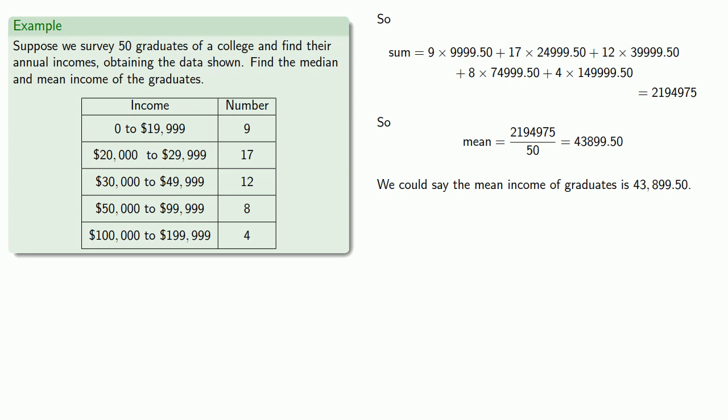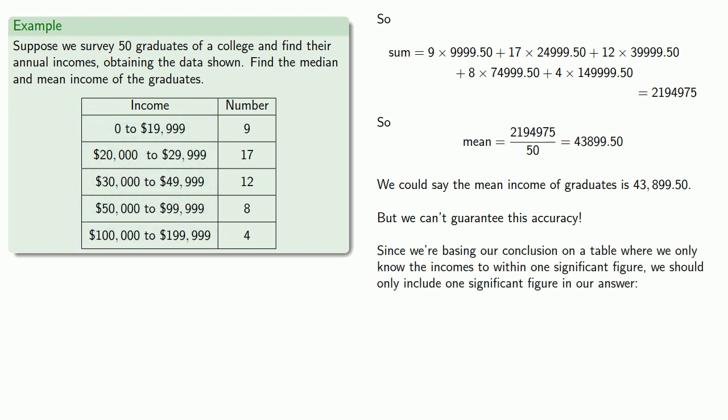And if we wanted to lie, we could say that. But we can't guarantee this accuracy. Since we're basing our conclusion on a table where we only know the incomes to within one significant figure, we should only include one significant figure in our answers. So the correct way of stating our conclusion is to say that the mean income of the graduates is $40,000.